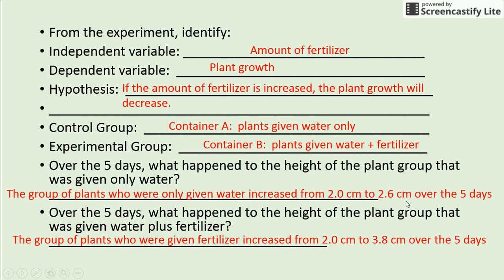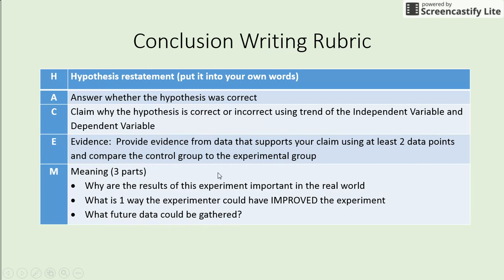Even though both groups increased, the group given fertilizer increased more. If we compare what the students originally thought was going to happen — that increasing fertilizer would decrease plant growth — to what actually happened in the data, we can see that their hypothesis was incorrect. Now we have all our parts, and we need to use some structure to write our conclusion.